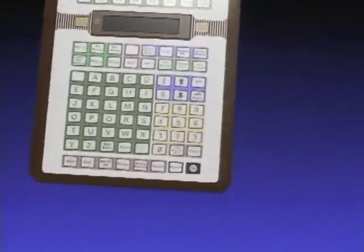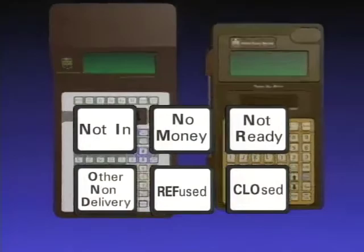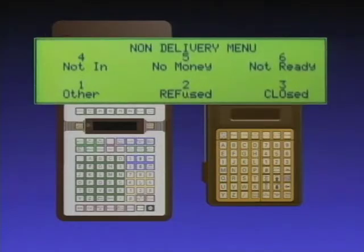So much for the dual function keys. In the next section of this video, we'll talk about new Dyad 2 menus. The purpose of these menus, like the dual function keys, is to reduce the number of keys on Dyad 2's keypad. On Dyad 1, you selected one of six keys to indicate a reason for non-delivery — not in, no money, not ready, and so on. On Dyad 2, these keys have been eliminated. Instead, the reasons for non-delivery are listed on a menu: the non-delivery menu.